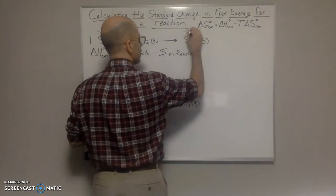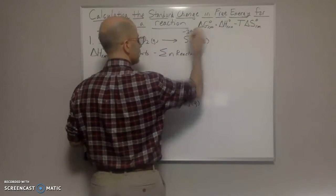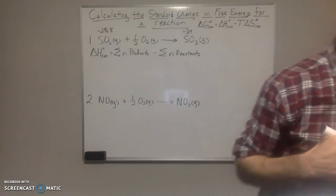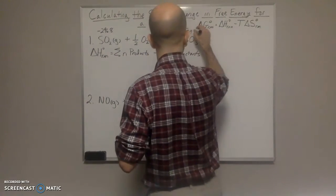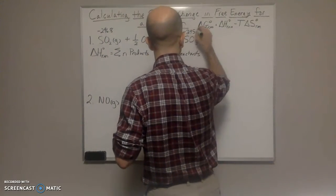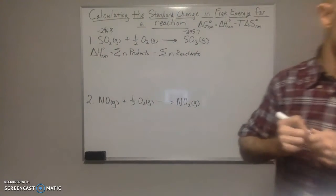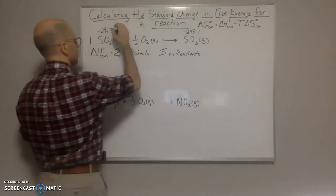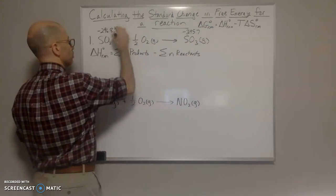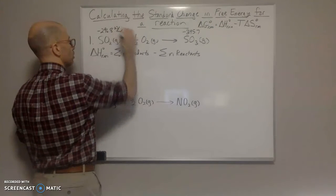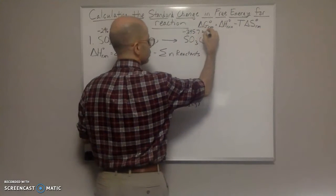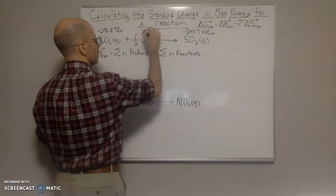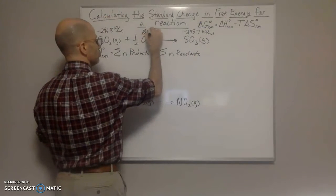So that's negative 395.7 kilojoules per mole. SO₂ and SO₃ are in kilojoules per mole, and oxygen is zero kilojoules per mole.